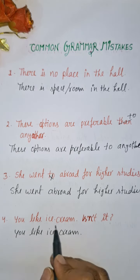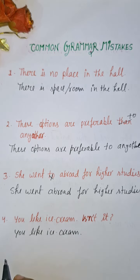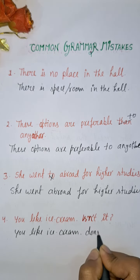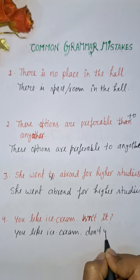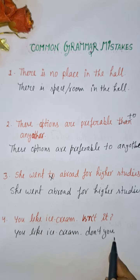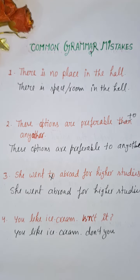Finally: 'You like ice cream, is not it?' This is wrong. The correct tag question is 'don't you,' matching the subject. So it should be: 'You like ice cream, don't you?' This is all about common grammar mistakes. Thank you so much for watching, guys. Bye bye, have a nice day, take care.